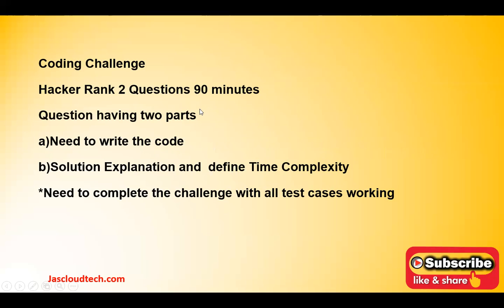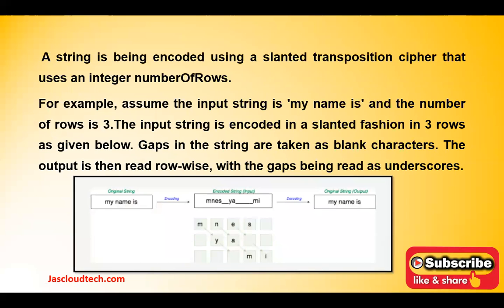The coding challenge had two questions on HackerRank, both to be completed within 90 minutes. Each question had two parts: first, write a working solution; second, explain that solution and define its time complexity. You need to use the most appropriate approach, minimize time complexity, and ensure all test cases pass — otherwise you won't receive a next-round invitation.